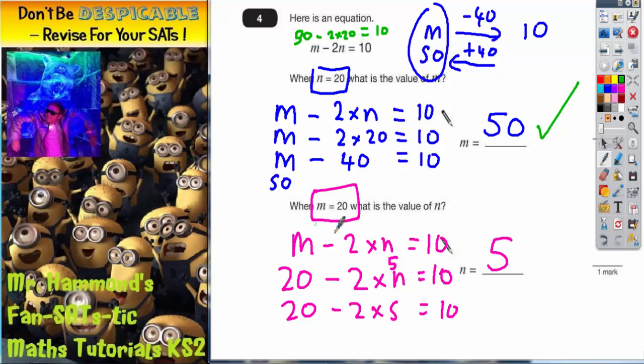Quick check: make sure it all works out. So if m is 20 and n is 5, m take away 2 lots of 5—2 lots of 5 is 10—20 take away 10 does equal 10. So 5 is the correct answer.